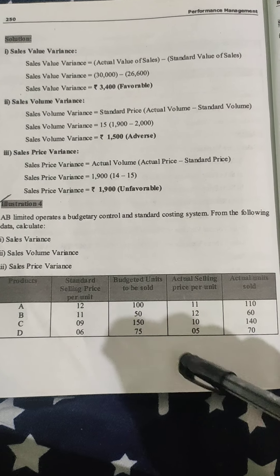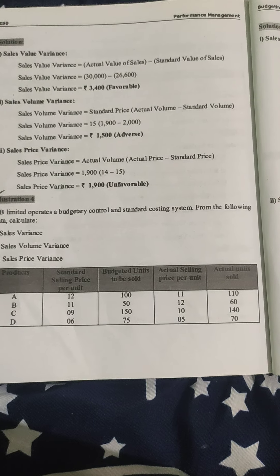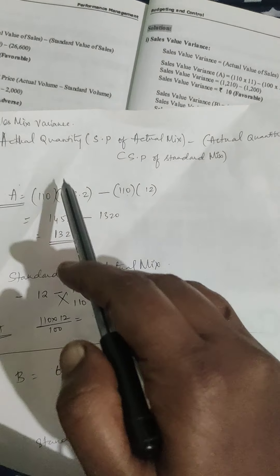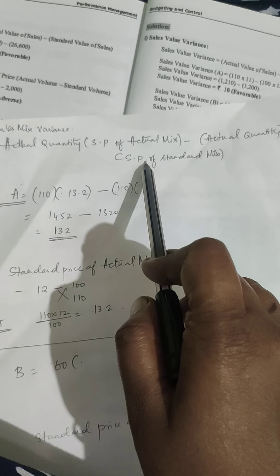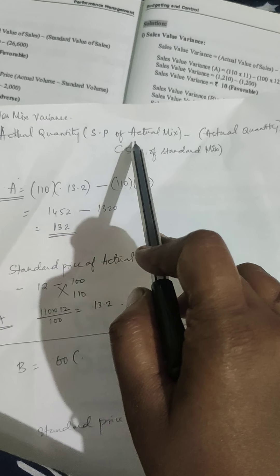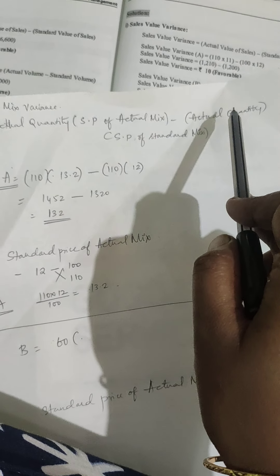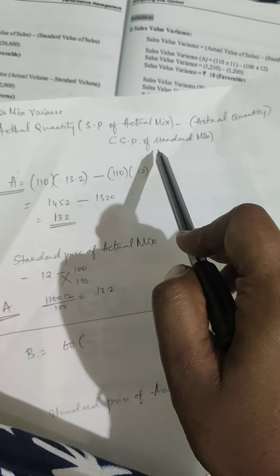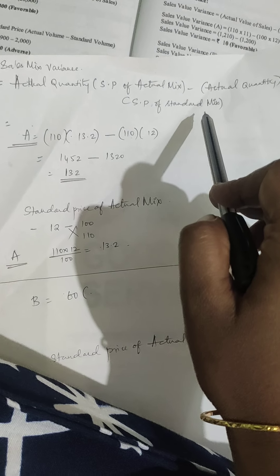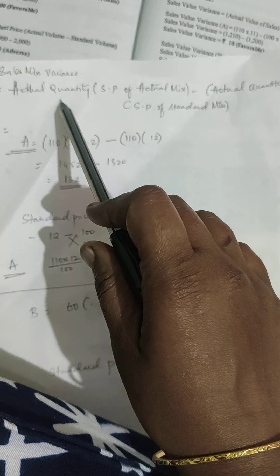The formula for sales mix variance is: actual quantity × standard price of actual mix, minus actual quantity × standard price of standard mix. We have actual quantity and standard price of standard mix from the problem, but we need to find the standard price of actual mix.